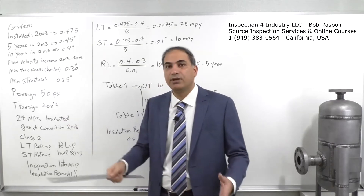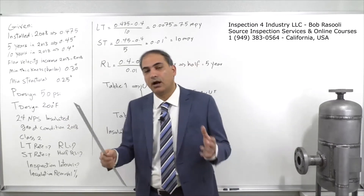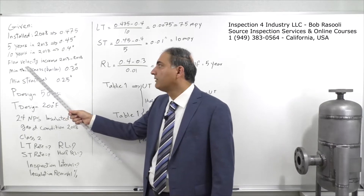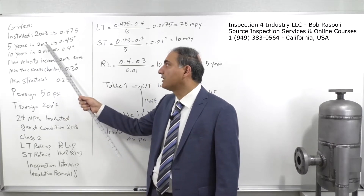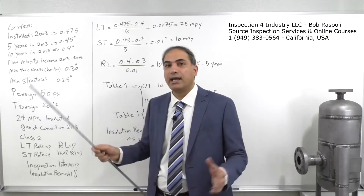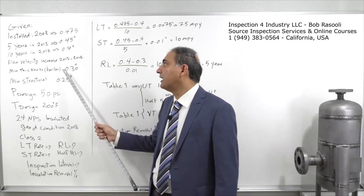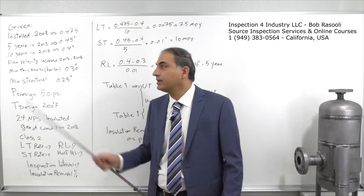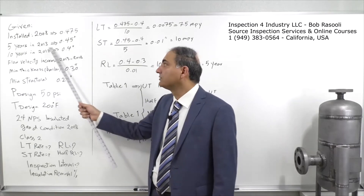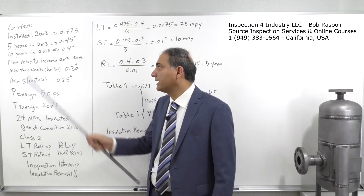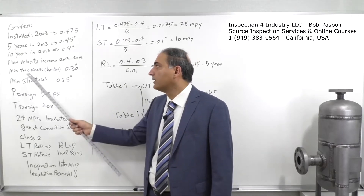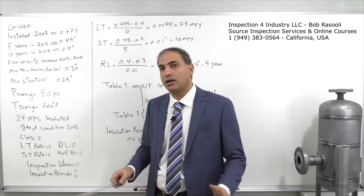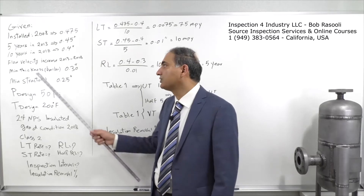Based on a review of operations, we realized that the flow velocity increased between 2013 and 2018. As a result, you can see we have a jump in the corrosion rate from 2013 to 2018.